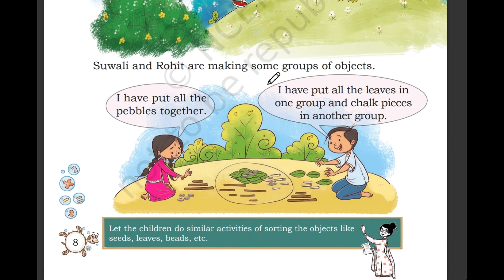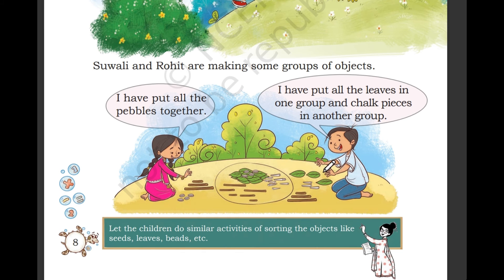Ali and Rohit are making some groups of objects. Ali has put all the pebbles together. Rohit has put all the leaves in one group and chalk pieces in another group.